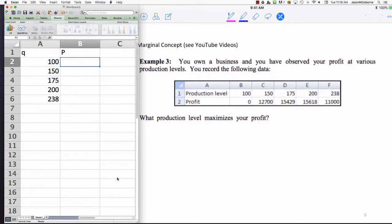We have profits of twelve thousand seven hundred, fifteen four to nine. Notice that none of these production levels is consecutive with each other increasing by one. At a production level of a hundred, you make zero profit. So I need to move this data down one. At a hundred it's zero, and at two thirty-eight it's eleven thousand dollars.